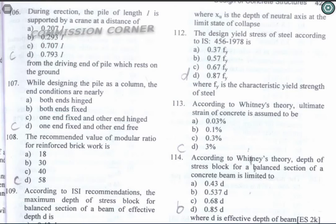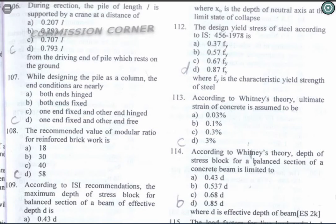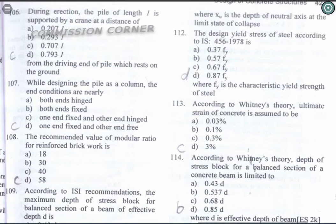Question 107: While designing a pile as a column, the end conditions are nearly: one end fixed and the other end hinged. Option C is the correct answer.